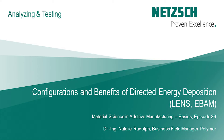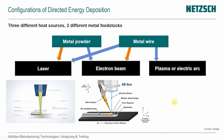In this next episode, I'll talk about configurations of DED processes and some pros and cons. In the video you've just seen, a powder was used, but there's also a different form of material — a wire. We can use metal powder and a metal wire, and we have three different heat sources: a laser, an electron beam, and plasma or electric arc.